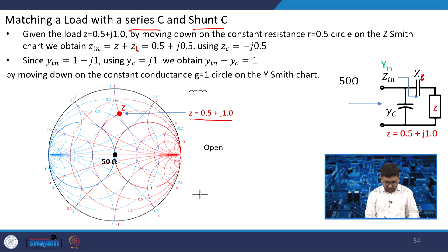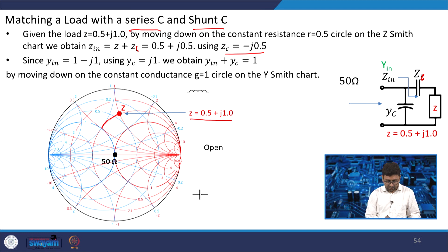When you move down, you move from j1 to j0.5, so minus j0.5. That gives ZC = −j0.5. When you move to this point and convert to admittance, your Y point represents 1 − j1. So this is the 1-circle point, and minus j1.